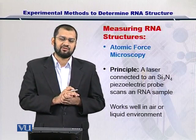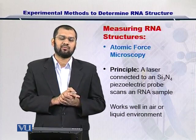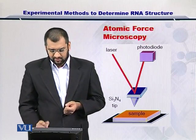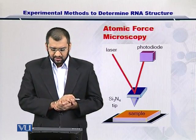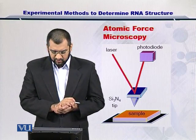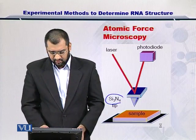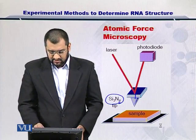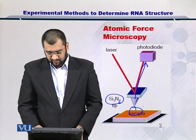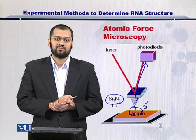If you have an RNA sample, you can simply freeze it or put it on ice and use atomic force microscopy to measure its structure. A schematic of this process is given here. As you can see, a laser is shined onto a piezoelectric substance, in this case SI3N4, and the reflection is detected, which is reflective of the structure of the sample, allowing us to measure the two prime or even the three prime structure.